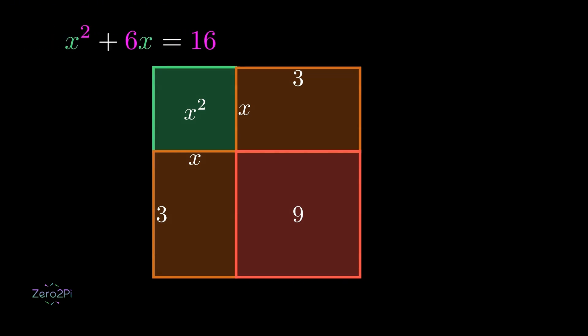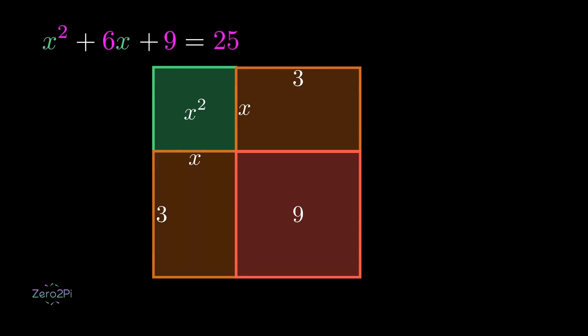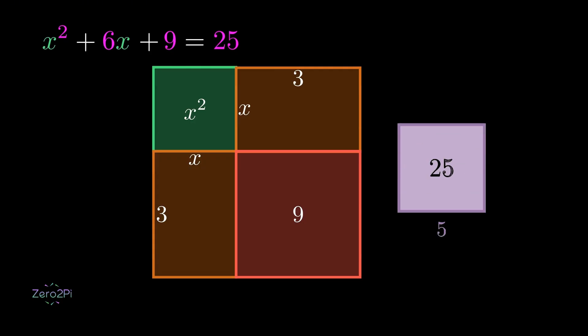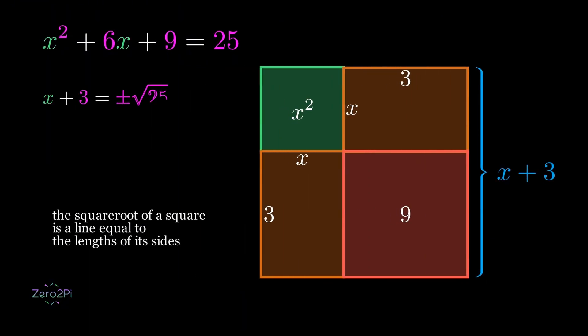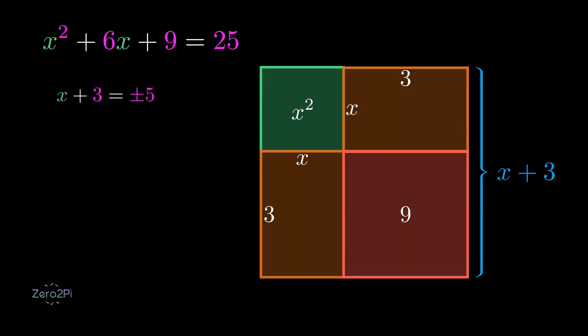And back to our precious equation. Since we added 9 to the shapes, we also need to add 9 to the whole equation. Now let's take a look at our big shape — it is a square. And look at the right side of the equation: 25. It is also a square. As these two squares are equal, any side of our square is equal to the square root of 25, which is plus or minus 5. And now we have x equals 2 or x equals negative 8. So we have successfully solved an equation using shapes.